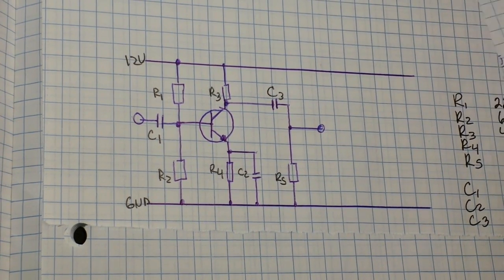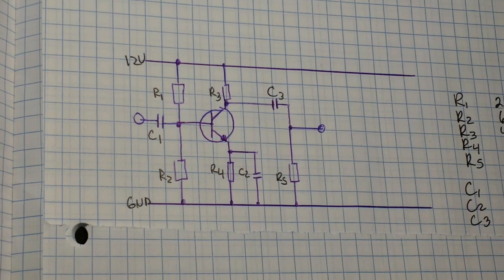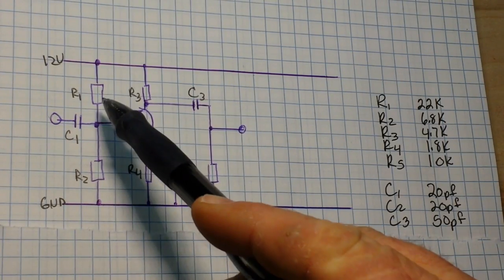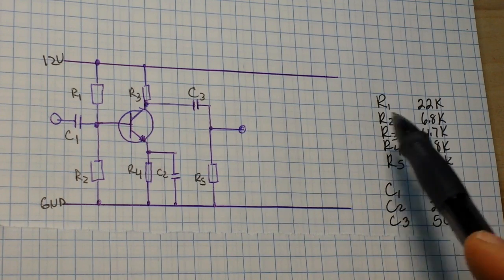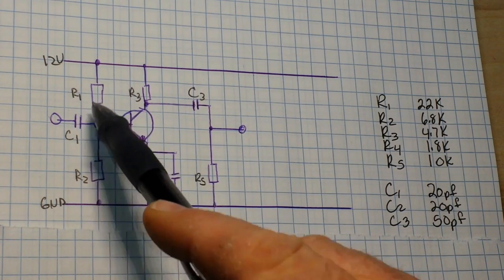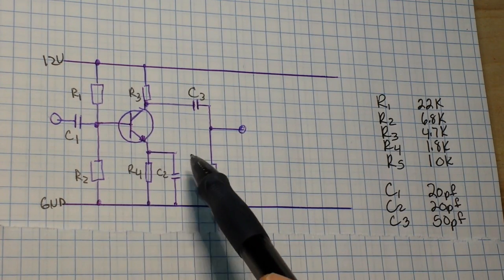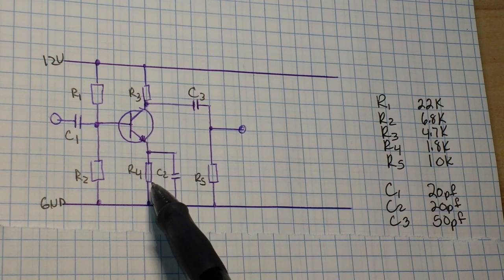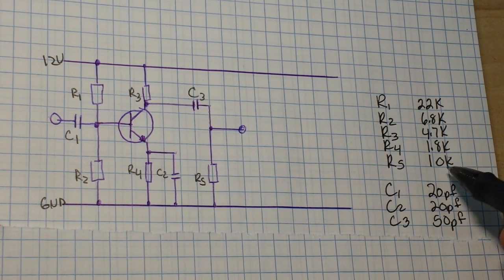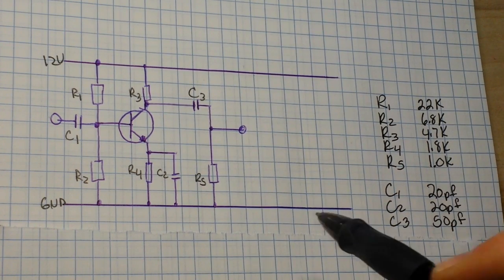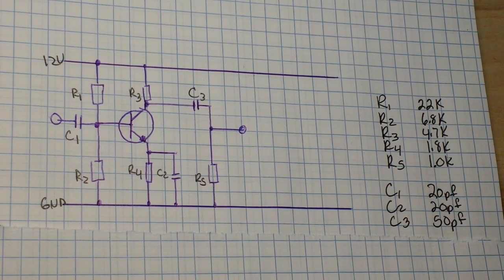Now the values for all these can be found right here. R1 is 22K, R2 is 6.8K and that provides our voltage divider. R3 is 4.7K, R4 is 1.8K, and R5 is 1K.